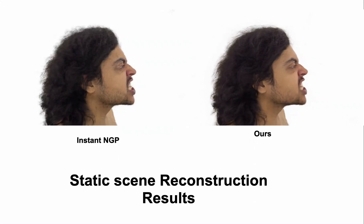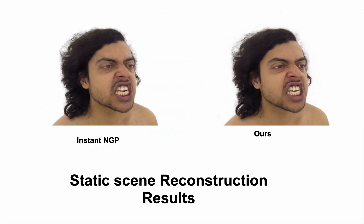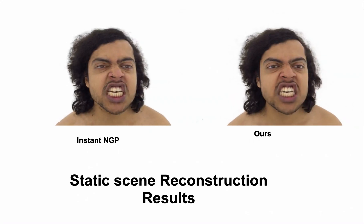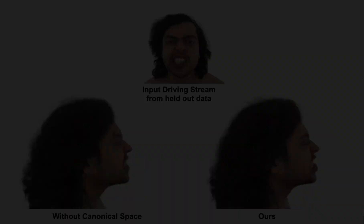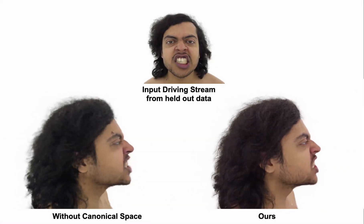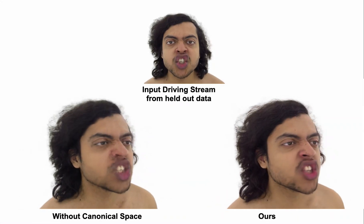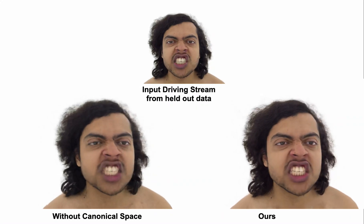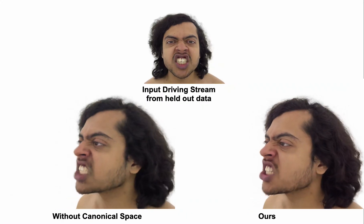We also show improvement over Instant NGP for reconstruction of a static scene. We observe that a model trained without using a canonical space leads to lower quality details.